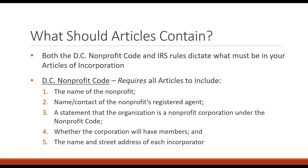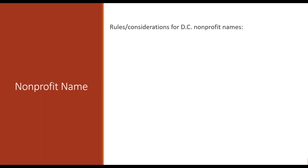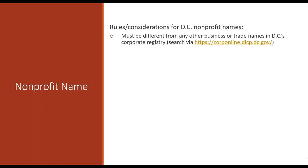Let's define some of these five components. First, your nonprofit name. Whatever name you choose must be different from any other business or trade names in DC's corporate registry — the DC government will not register a nonprofit with an identical name to another entity. You'll get very familiar with CorpOnline, DC's business and corporations registry, where you'll do a lot of filings. Search your proposed name and variations to see if anyone else is already using it.